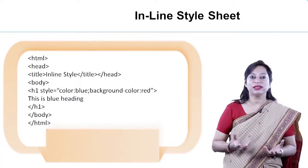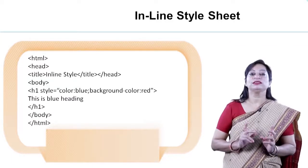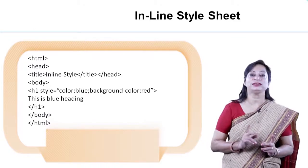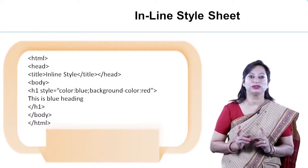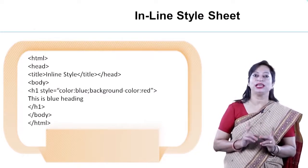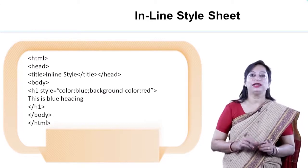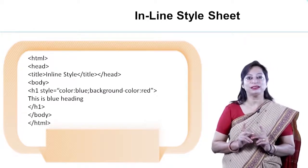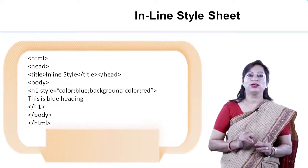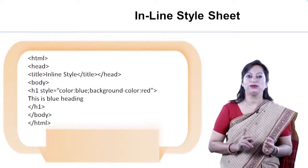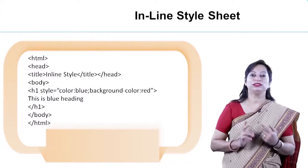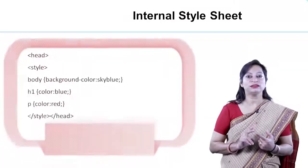Next is the internal style sheet. This is the second style sheet. An internal CSS is used to define a style for a single HTML page. If we want to add styles for only one page, then we use this style sheet. It is defined in the head section of an HTML page within a style element. Whatever style we include, we have to put it inside the style element in the head section. This is an example of internal style sheet.